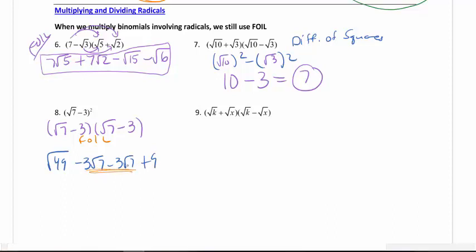Minus 3 radical 7 plus 9. We will always have double the middle term. That's by design. So minus 6 radical 7. Remember you keep the radical. You add the coefficient in front. This is a perfect square.